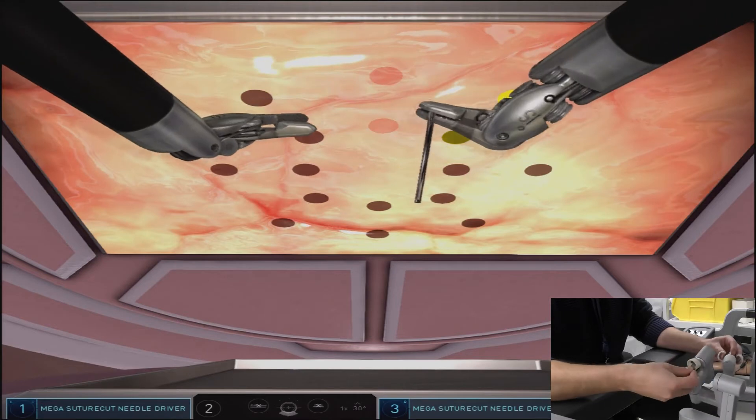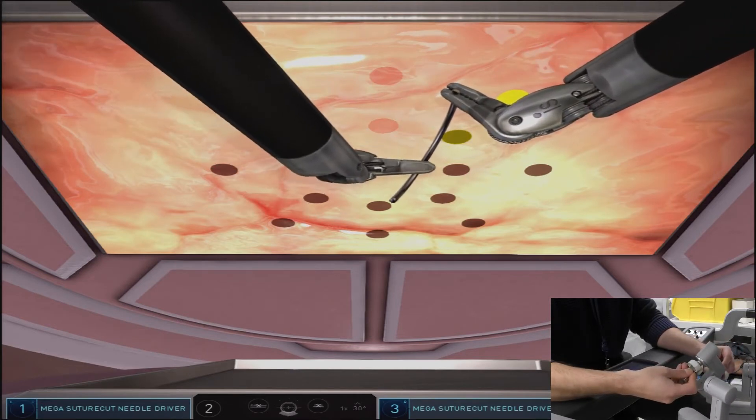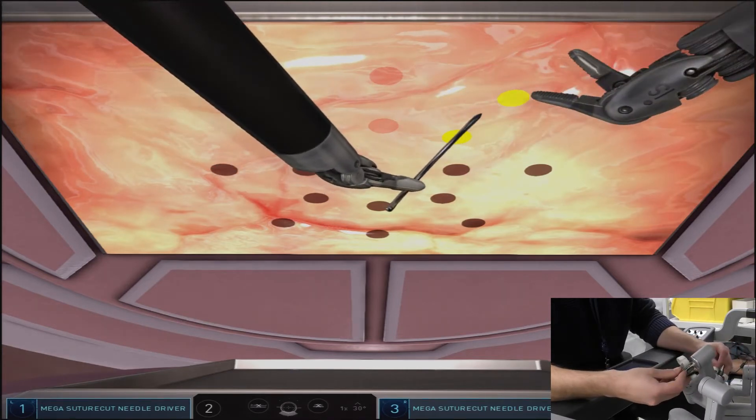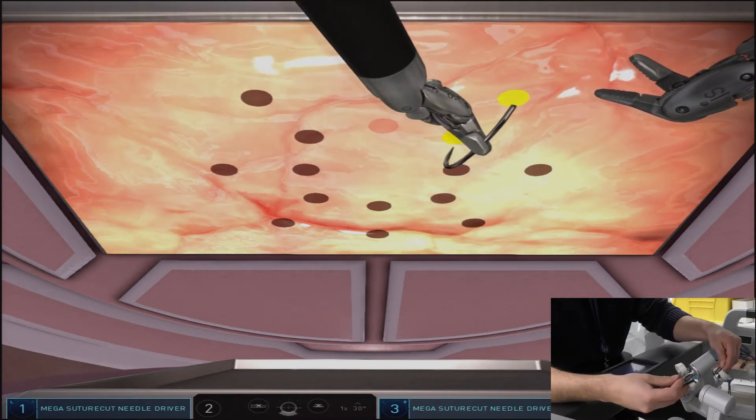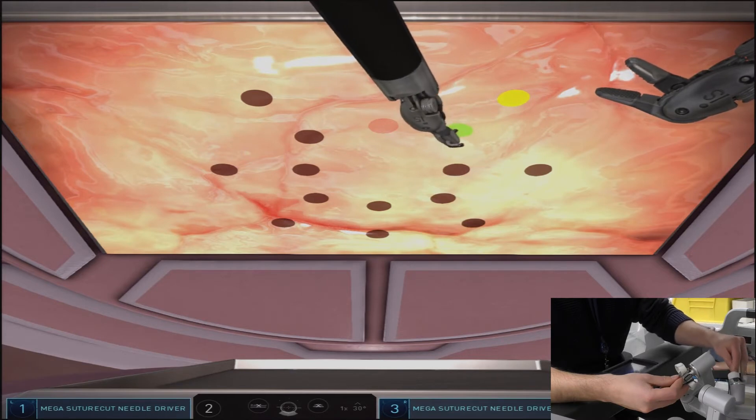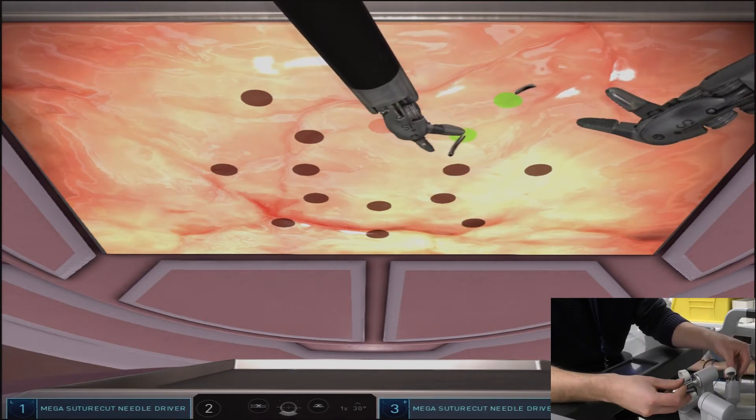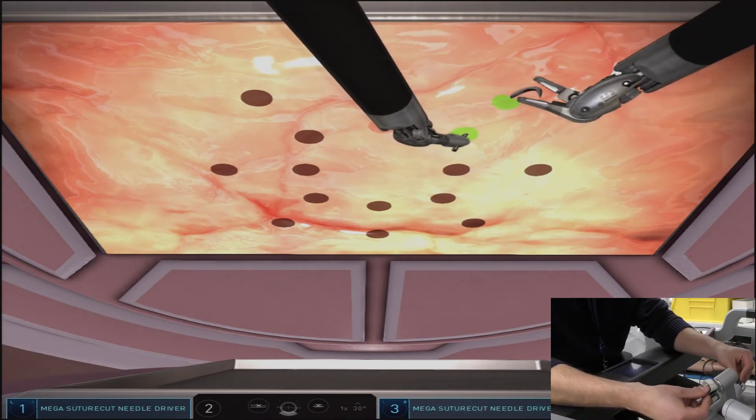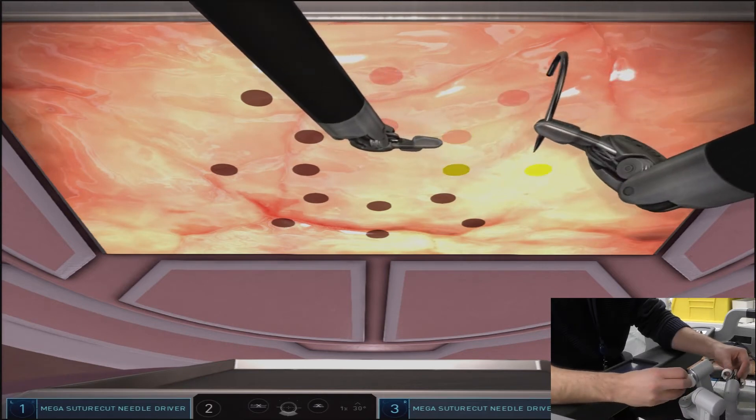There are multiple ways to approach each of these throws. For example, in this next throw I decided to use my left hand, when in fact you could also use your right. Ultimately I settled on grabbing the needle with my left hand in the pronated position, supinating my hand for needle position, and then repronating through the throw.